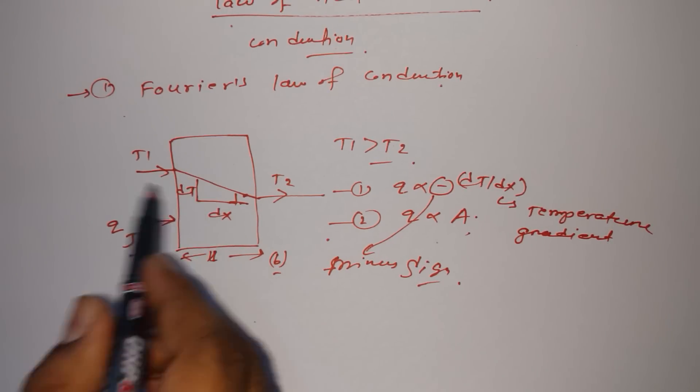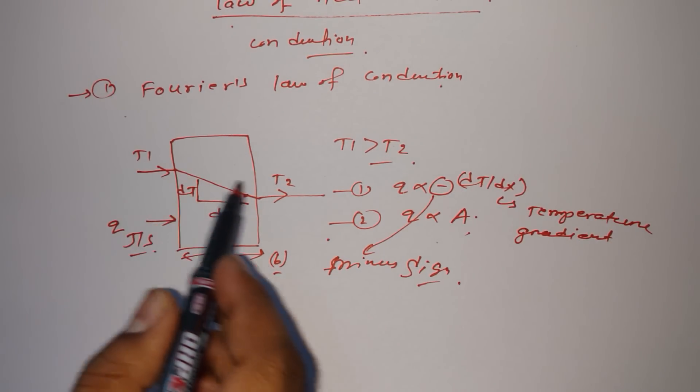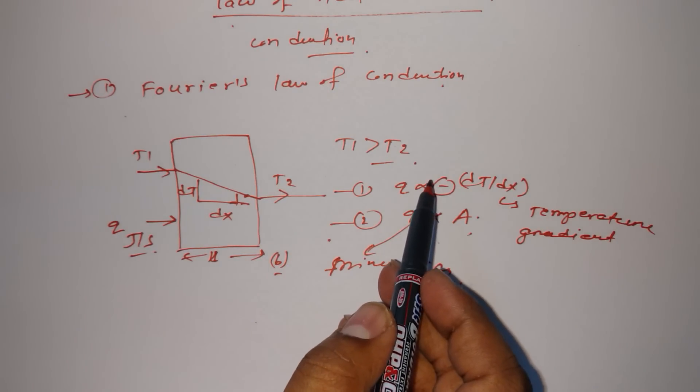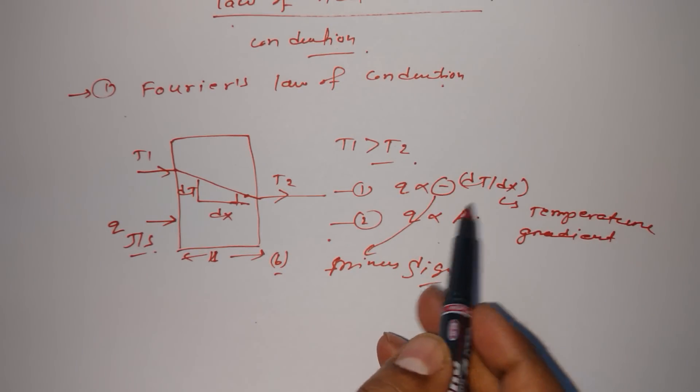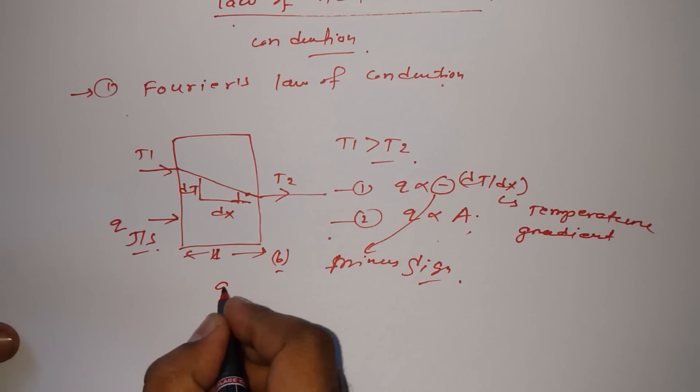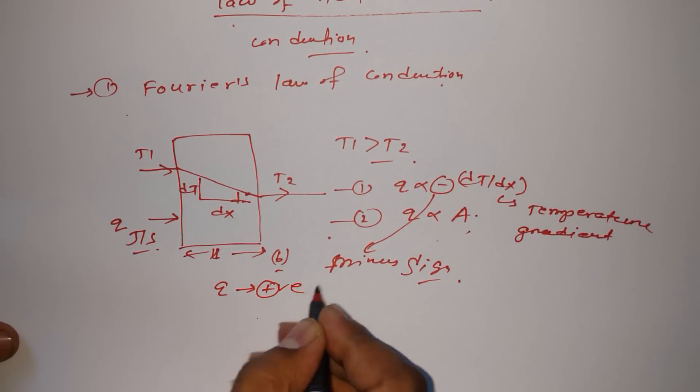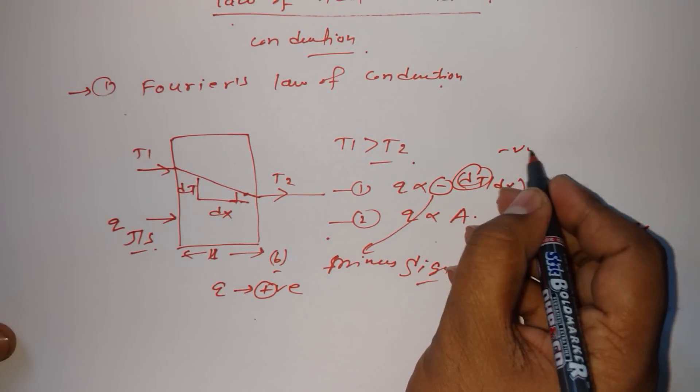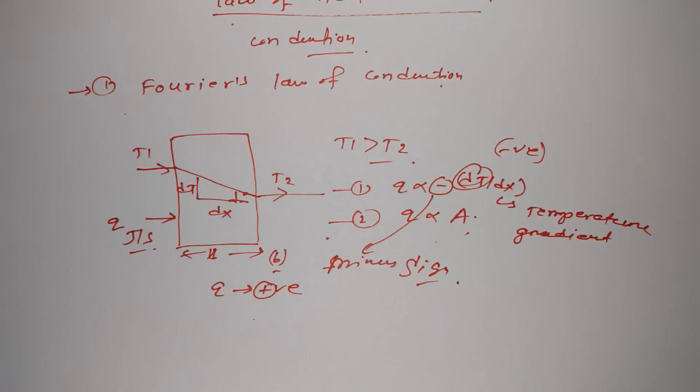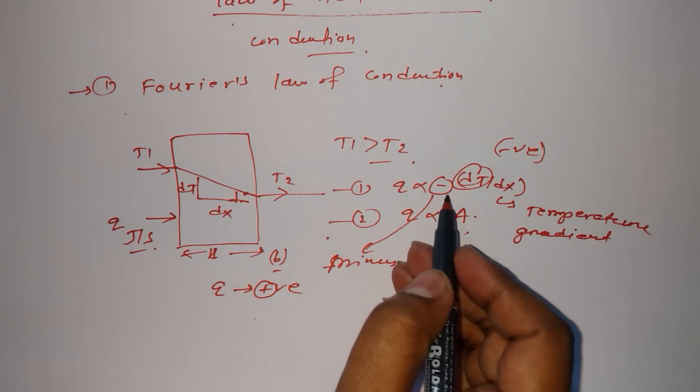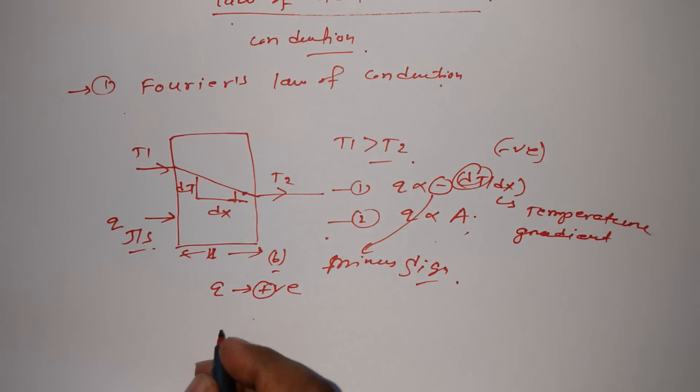Because temperature flows from higher to lower, that's why we put the minus sign. Then what happens after calculation? Q would be positive: minus and minus, because here we'll get minus and here minus, so minus times minus equals plus. That's why we put the minus sign.